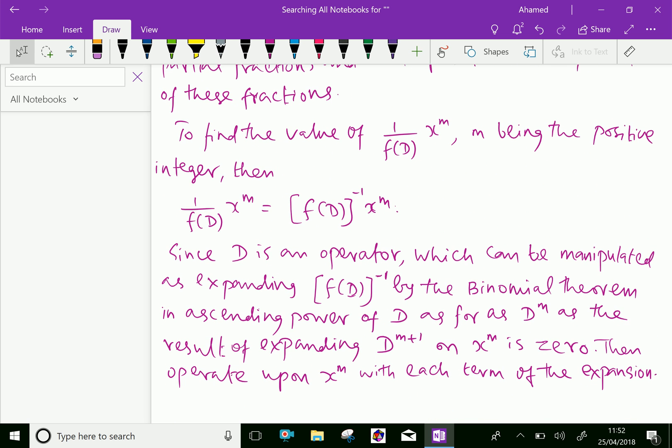To find the value of 1 over f of D times x power m, where m is a positive integer, 1 over f of D into x power m equals f of D power minus 1 times x power m.